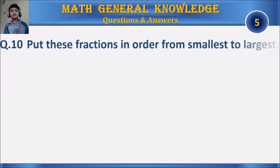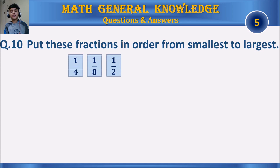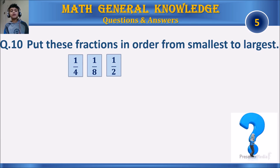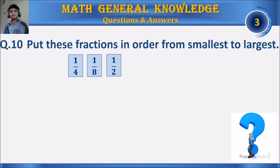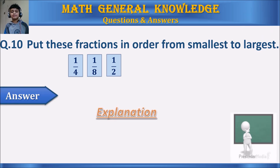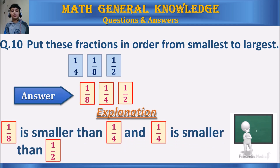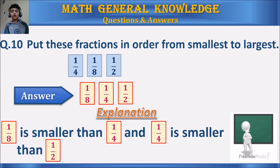Question 10: Put these fractions in order from smallest to largest. Your time starts. The answer is 1/8, 1/4, and 1/2. One-eighth is smaller than one-quarter, and one-quarter is smaller than one-half.